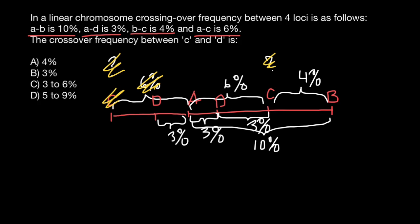But again, the position of the gene D also can be here. So let's find in this case what is going to be the distance: 3% here plus 3% here plus 3% here. So another option we can say it can be 3 or 9%.